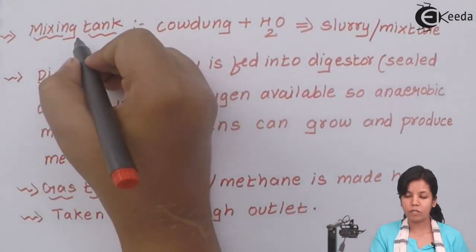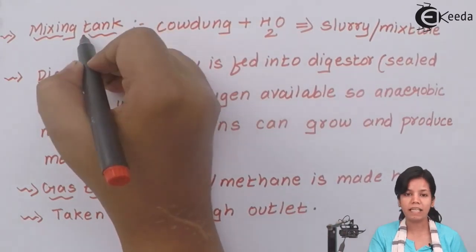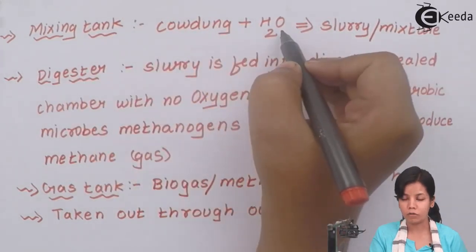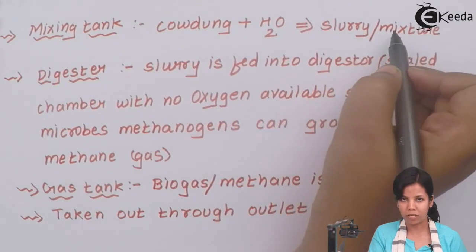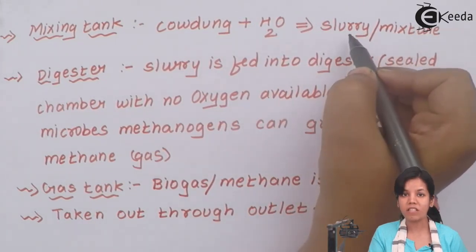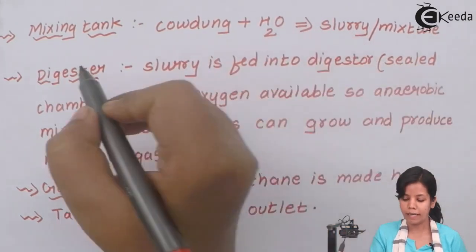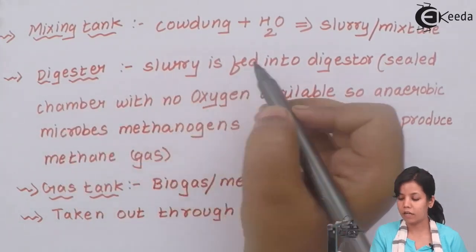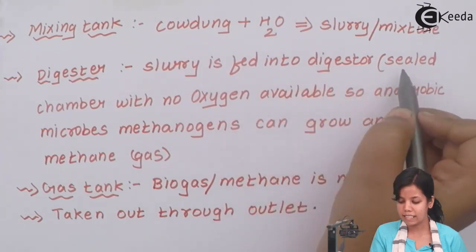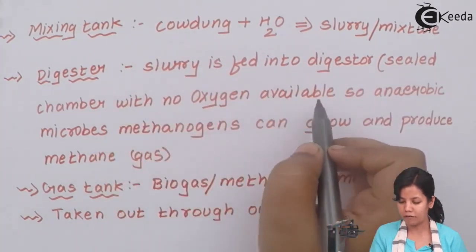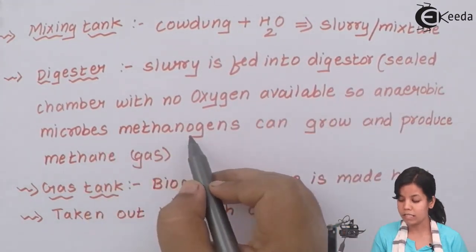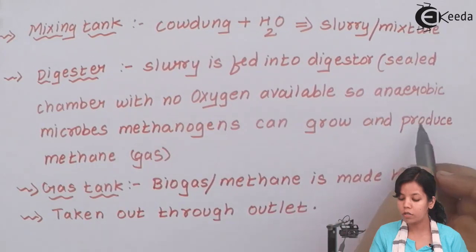The first process where production of biogas or gober gas starts is the mixing tank. In the mixing tank, cow dung plus water is added which forms slurry or mixture. This slurry is then transferred into the digester, which is a sealed chamber with no oxygen available, so anaerobic microbes like methanogens can grow and produce methane gas.